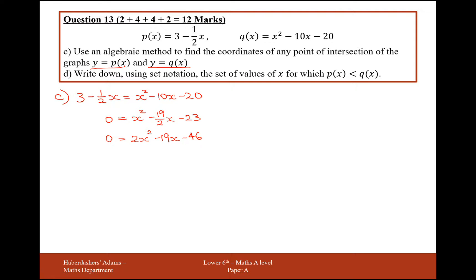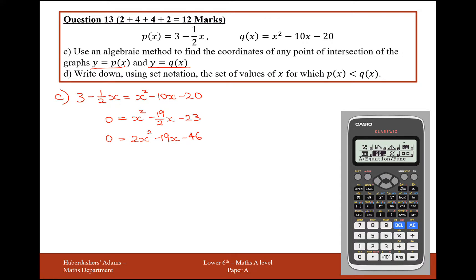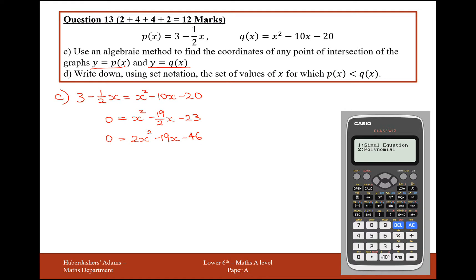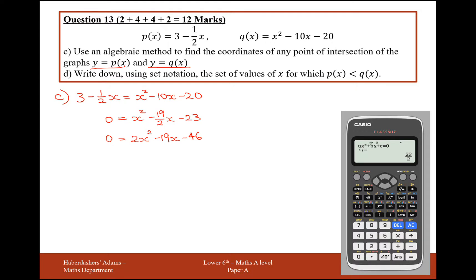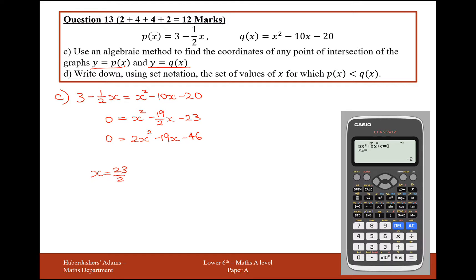You might be able to factorize this into two brackets. Let's use the calculator to help me do the work here. So what I've done is I've hit the menu button. I've scrolled down to option A. I'll select polynomials and I'll select a degree of 2. I'll type in my polynomial 2 minus 19 minus 46. And press enter. And I get x is 23 over 2. That's a nice good number. And the next one is going to be x equals minus 2.